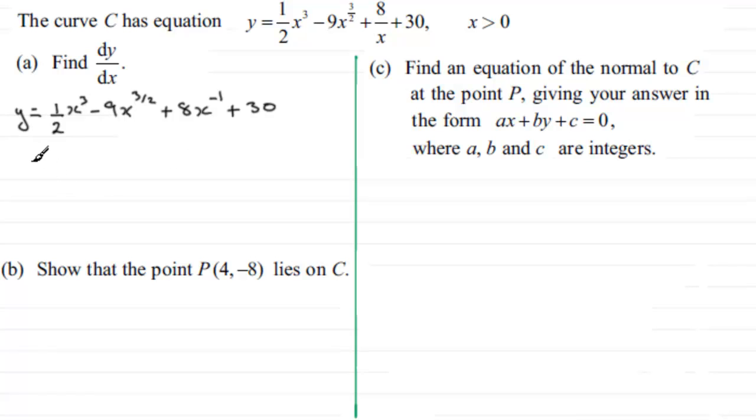We can now differentiate in the usual way. Multiply the power with the number in front, then reduce the power by 1. For the first term, 3 times 1/2 is 3/2, then x². For the second term, -9 times 3/2 is -27/2, then x^(1/2). For 8x^(-1), we get -8x^(-2). The constant 30 differentiates to 0.